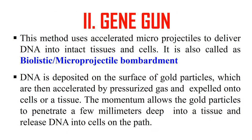Second, gene gun. In this method we use accelerated microprojectiles to deliver DNA into intact cells. It is also known as biolistic and microprojectile bombardment. The procedure is: we deposit our DNA on gold particles, and these gold particles are accelerated by pressurized gas and expelled into the cells. Just imagine a gun — instead of a bullet, we have gold particles on which DNA has been deposited. We fire our gold particles at the cells or tissue; due to the high pressure, these gold particles penetrate the tissue and deliver our DNA inside the cell.